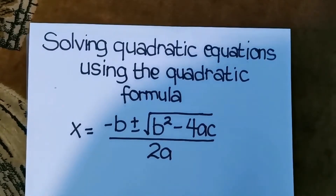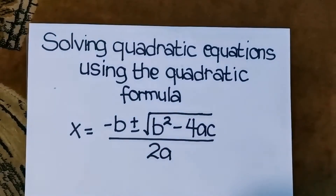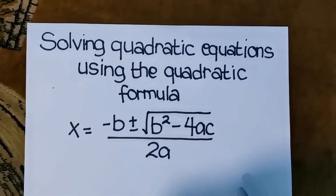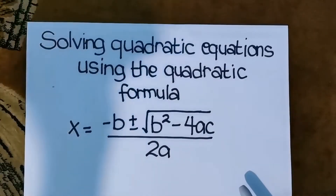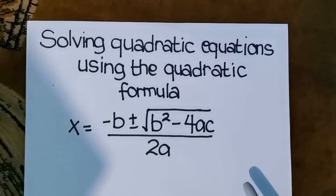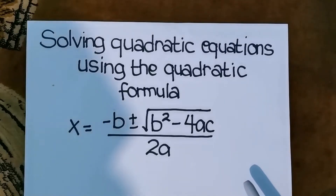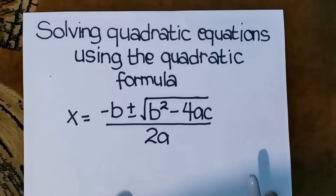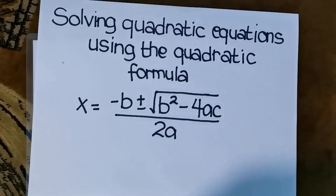Good day, Grade 9 learners. Our topic for today is solving quadratic equations using the quadratic formula. We will be dealing with this formula on how to get the solution of our given quadratic equations. For any given quadratic equation in one variable in the standard form ax² + bx + c = 0, all you need to do is substitute the corresponding values of the numerical coefficients a, b, and c into our formula.